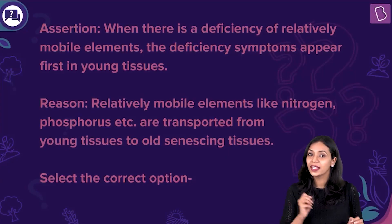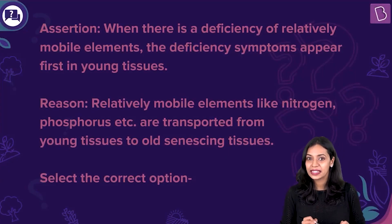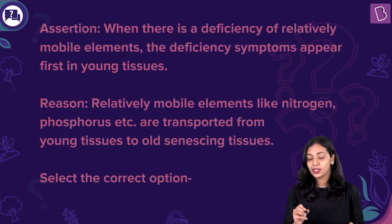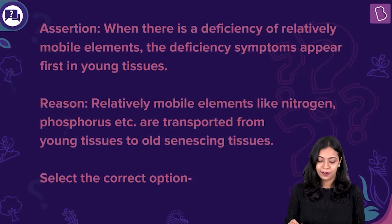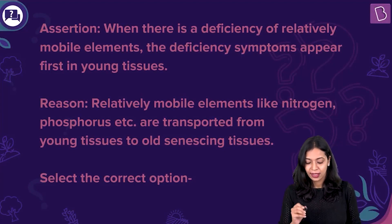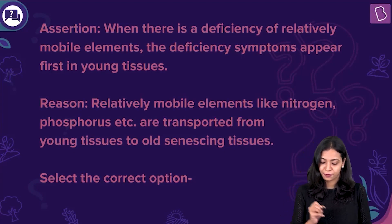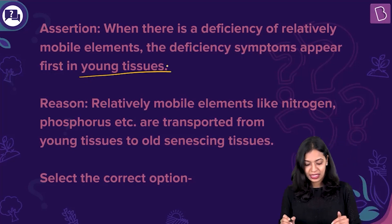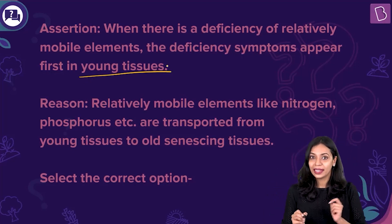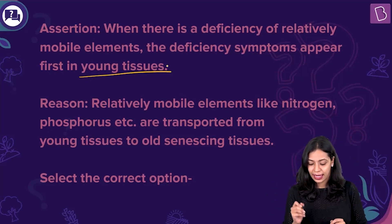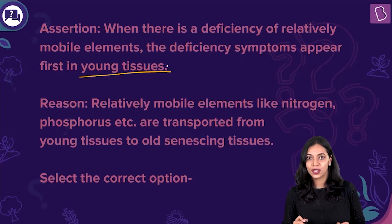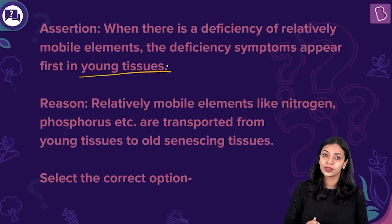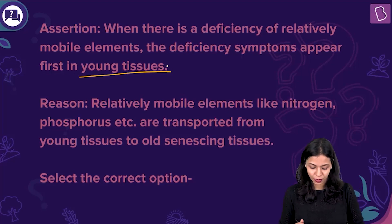Here is an assertion and reason type of question. Assertion: When there is a deficiency of relatively mobile elements, the deficiency symptoms appear first in young tissues. Reason: Relatively mobile elements like nitrogen, phosphorus, etc. are transported from young tissues to old senescing tissues.